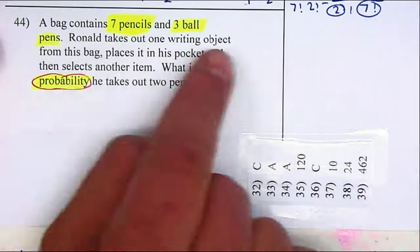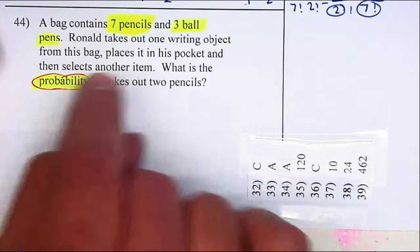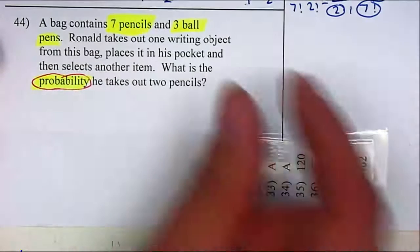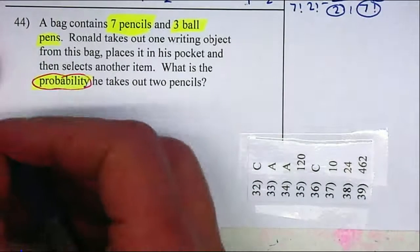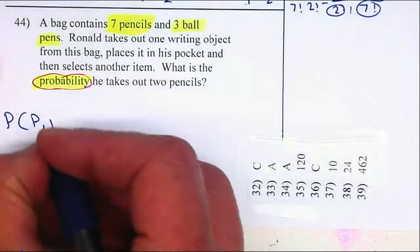In this case, because he takes one, places it in his pocket and then selects another, we're taking one and then another. So we need two fractions. Probability is going to be a pencil and then a pencil.